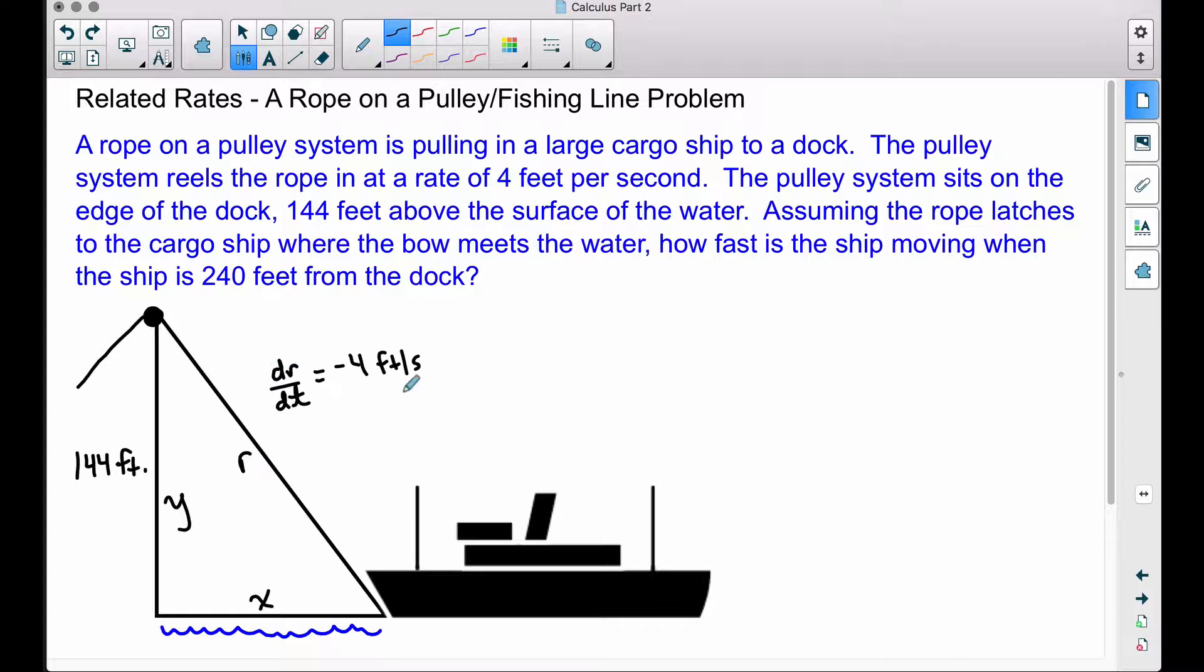Now, I also have dR/dt. The rate of change of this rope is going to change at a rate of 4 feet per second based on what the problem says. And since the rope is being reeled in, we use negative 4 because the length of this rope is getting shorter. That's why we have a negative there.